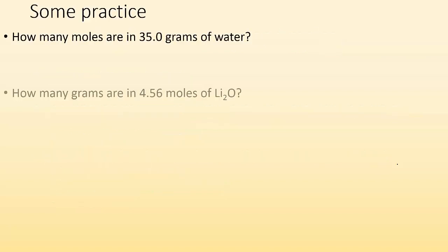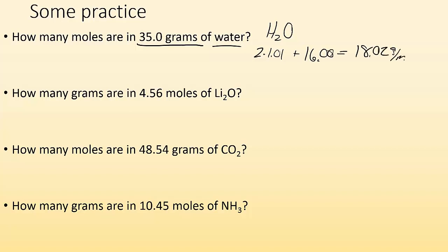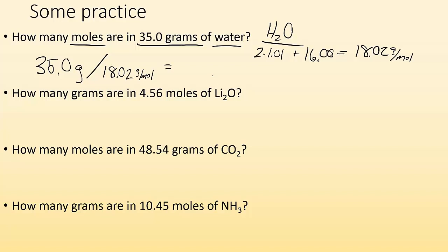Let's try some practice problems. How many moles are in 35.0 grams of water? H2O has a molar mass of 2 times 1.01 plus 16.00, which equals 18.02 grams per mole. Since I want moles and they give me grams, I do 35.0 grams divided by 18.02 grams per mole, and I get 1.94 moles as my answer.